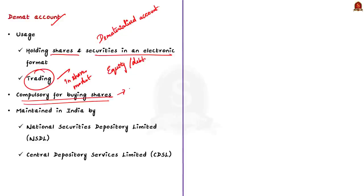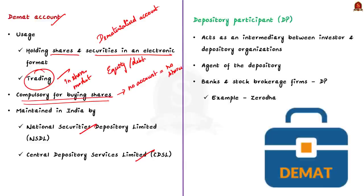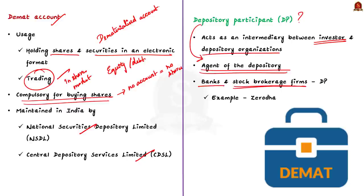The DMAT account is used not only for holding shares but also for trading shares in the share market. If you want to buy shares of a company, you need a DMAT account. In India, DMAT accounts are maintained by two depository organizations: National Securities Depository Limited (NSDL) and Central Depository Services Limited (CDSL). A depository participant — such as a bank or stock brokerage firm — acts as an intermediary between the investor and the depository organizations. In India, a depository participant is described as an agent of the depository. One of the famous depository participants in India is Zerodha.